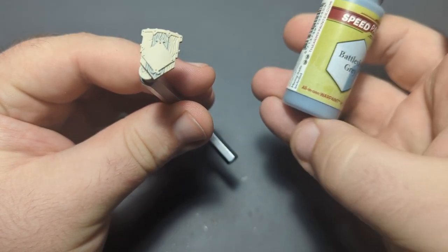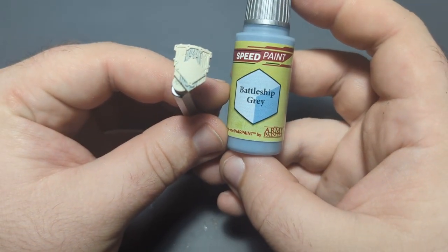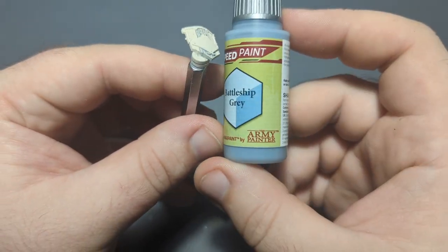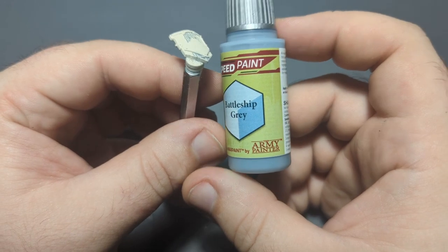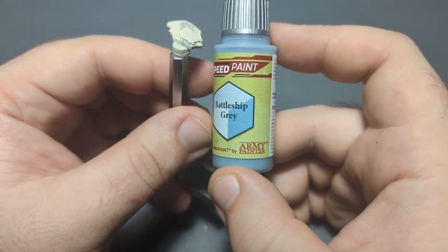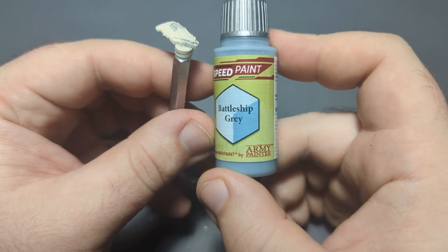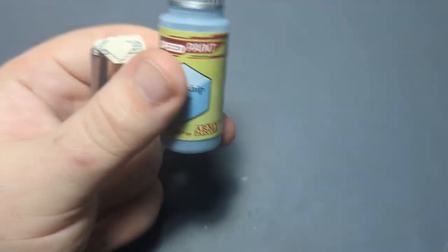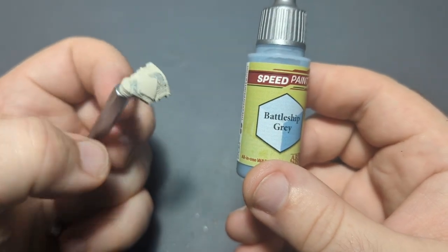Alrighty, we are back and we're moving on to our next color, and that's going to be Battleship Gray from the new Speed Paint 2.0. This doesn't actually say 2.0 on it. Interesting. Well, it is from the 2.0 because it came out of the 2.0 mega set. Maybe this is one of the old colors that they redid for 2.0.